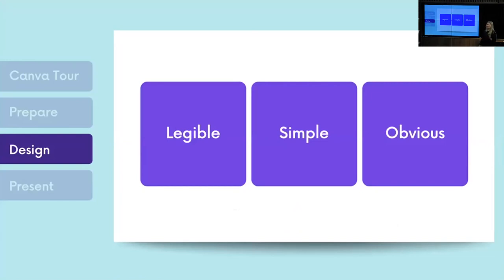Once you've spent the time developing your preparation, designing is somewhat easy — you've got all the content and you're ready to go. This is where Canva can really help you. The three things to bear in mind are: keep it legible, keep it simple, and keep it obvious. We'll run through some pointers on how to achieve each of those.